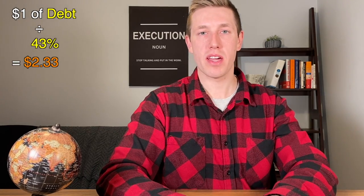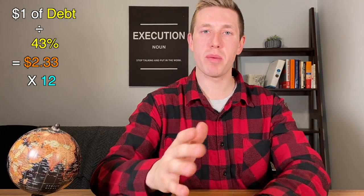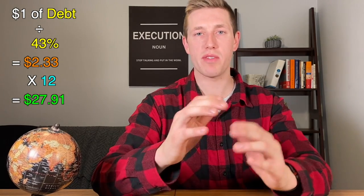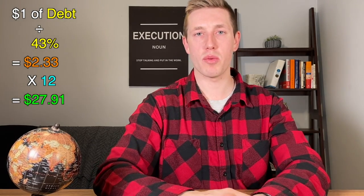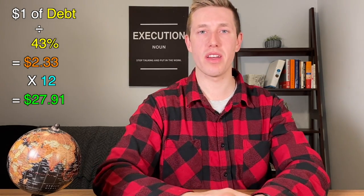Here's how I got that calculation. Take that $1 and divide it by 43%, which equals $2.33. Then multiply it by 12 for how many months there are in a year, which equals $27.91 — nearly $28 for just $1 of debt.